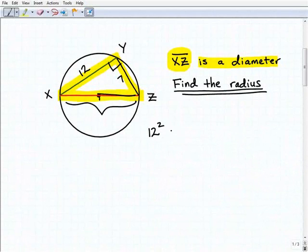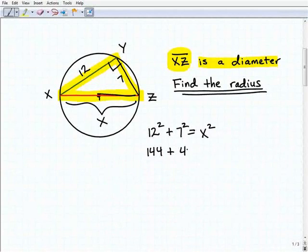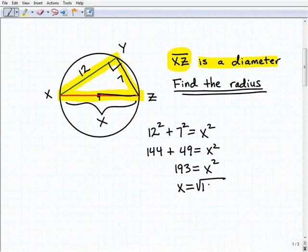That'd be 12 squared plus 7 squared equals, I'm going to call this x for the time being, x squared. Again, x will represent the hypotenuse XZ. So this would be 144 plus 49 equals x squared, or 193 equals x squared. So to solve for x, I'm going to take the square root of both sides, the square root of 193.